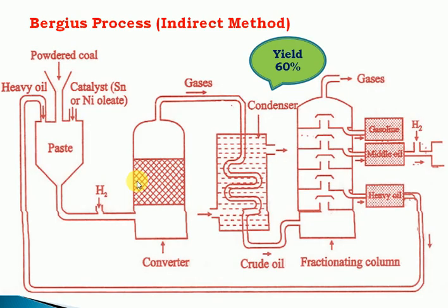The method used is the Bergius process. In this method, coal is first powdered. The reason for using powdered coal is to ensure uniform reactions. That is why fine powder form is used.